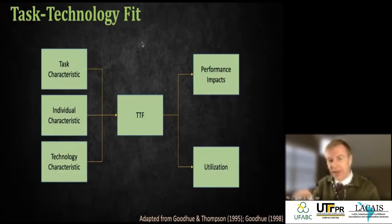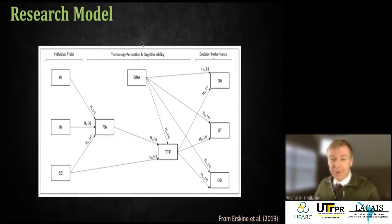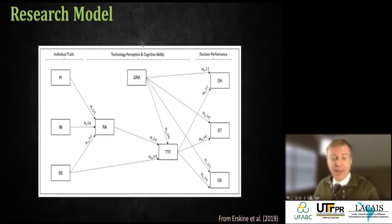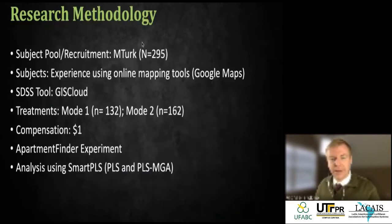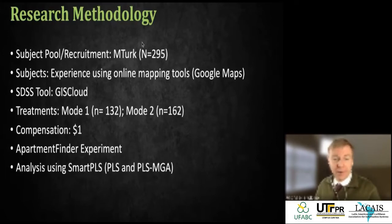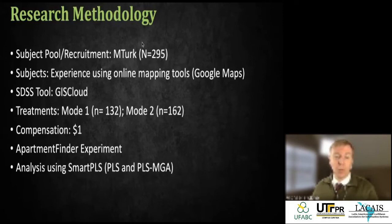The updated model includes relative advantage's impact on task technology fit, and on the far right, decision performance now includes accuracy and time but also satisfaction — a qualitative measure we wanted to add. For this study we used Amazon Mechanical Turk, requiring subjects to be familiar with Google Maps. We used GIS Cloud to build the tool, had two treatment conditions with a near-even split of 132 versus 162 participants, compensated one dollar each, and analyzed using SmartPLS.